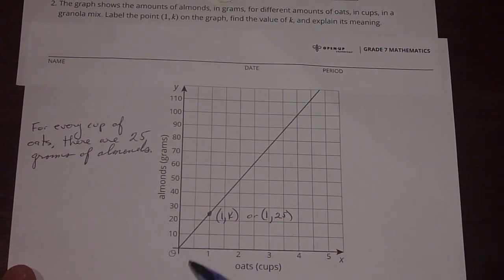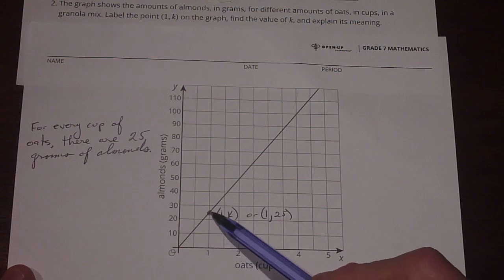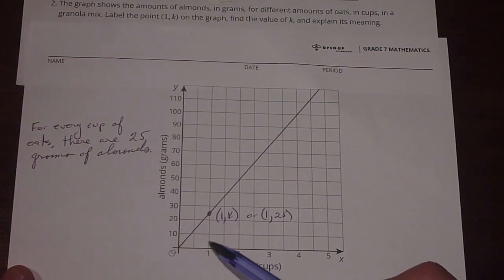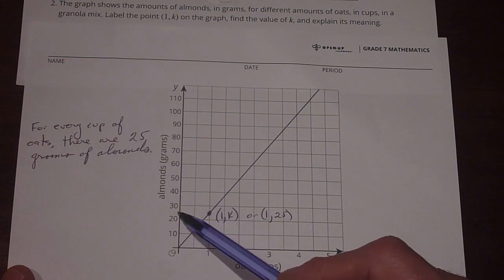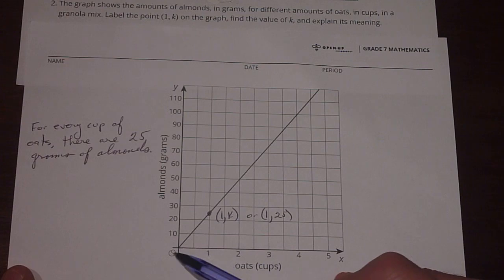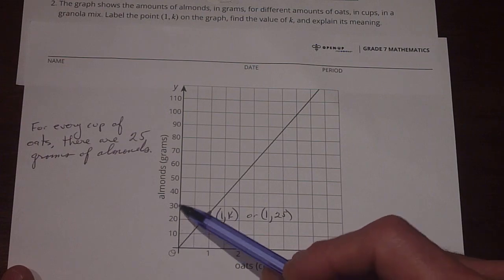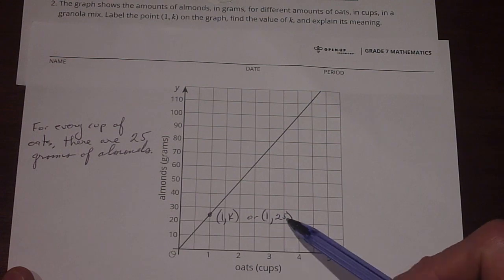So I see my units down here are 0, 1, 2, 3, 4, 5 cups of oats. So I know that on my x-axis, I come over to 1, and I go up to where the line for 1 intersects the graph. And I put my point there, and I try to interpolate where it is over here on the y-axis for the amount of almonds in grams. So I see that it's about halfway between 20 and 30. So I said it's 1, k, or also known as 1, 25.